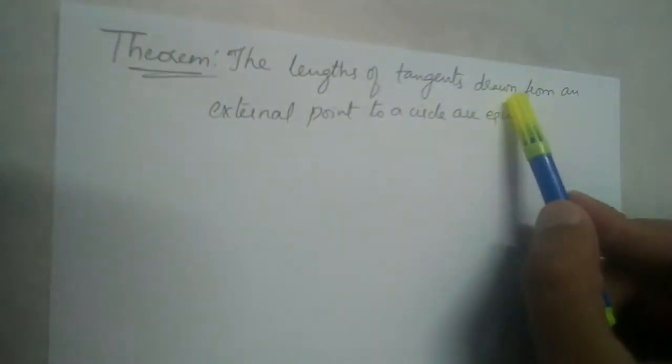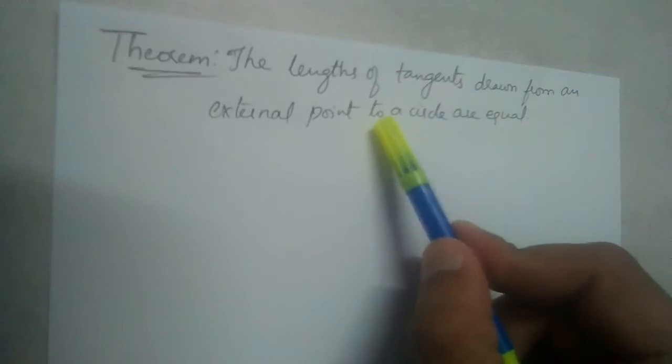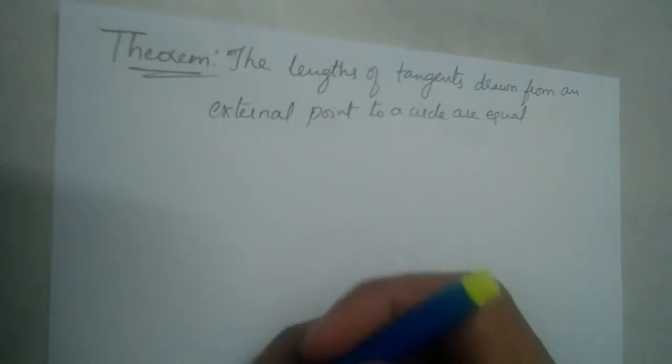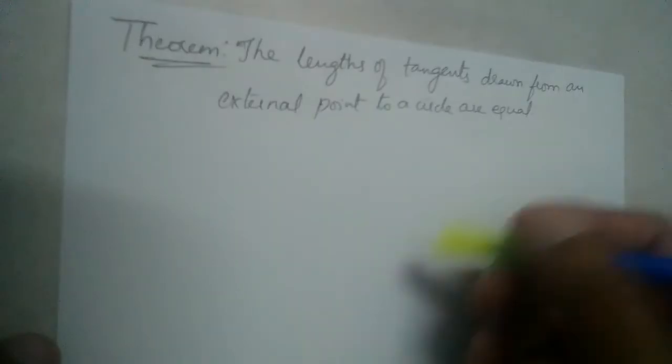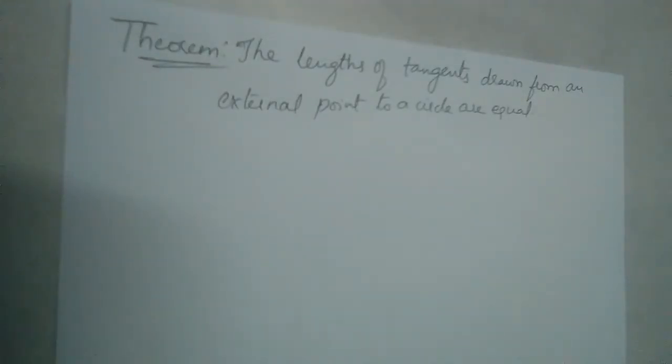So, the lengths of tangents drawn from an external point to a circle are equal. If we draw tangents to a circle from a point outside the circle, the lengths of tangents are equal. We should prove that.